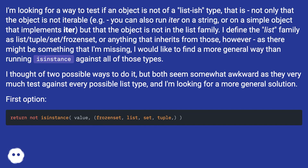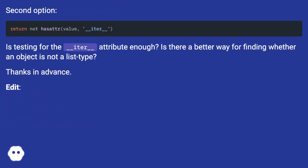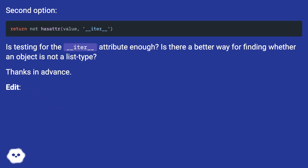First option. Second option. Is testing for the __iter__ attribute enough? Is there a better way for finding whether an object is not a list type?